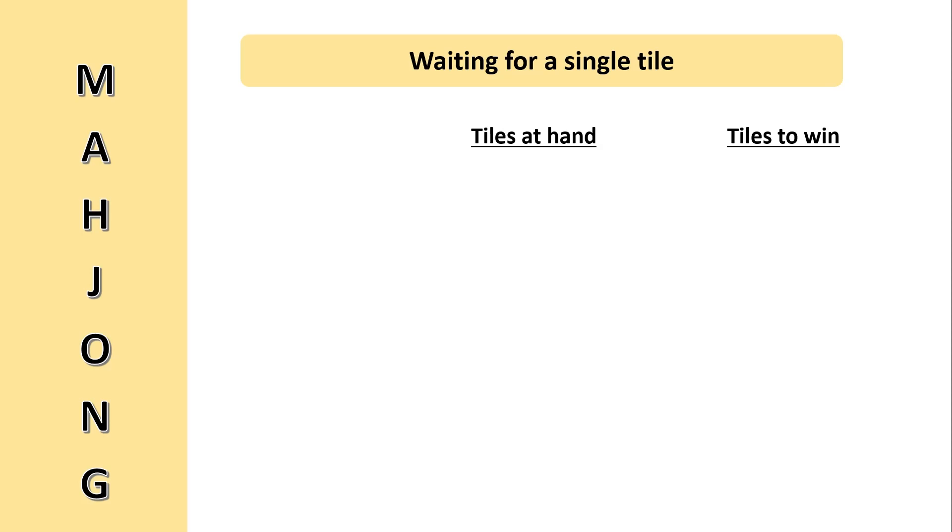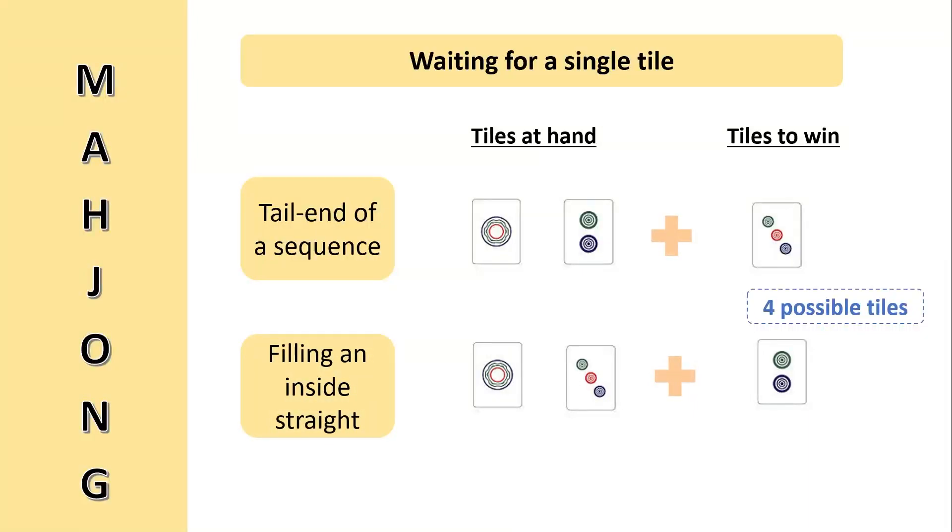Starting from the worst hand from a probability standpoint, this will obviously be in situations where we are waiting for just one tau. The first example here is when we have two numbers at the terminal end of a number sequence, like a yi tong and ee tong. We can only wait for a san tong to win the game. Assuming that no san tong has been discarded or appeared during the game, this means that only four taus will win you the game, with a maximum of 144 taus in the game. Waiting for these four taus is definitely a low probability and allow your opponent to beat you to winning the game.